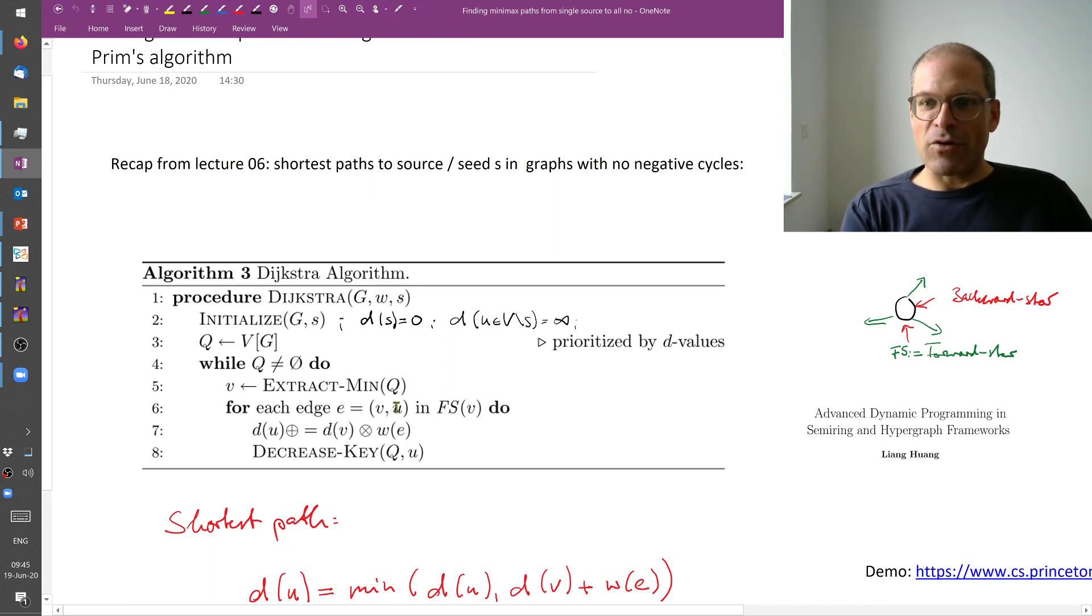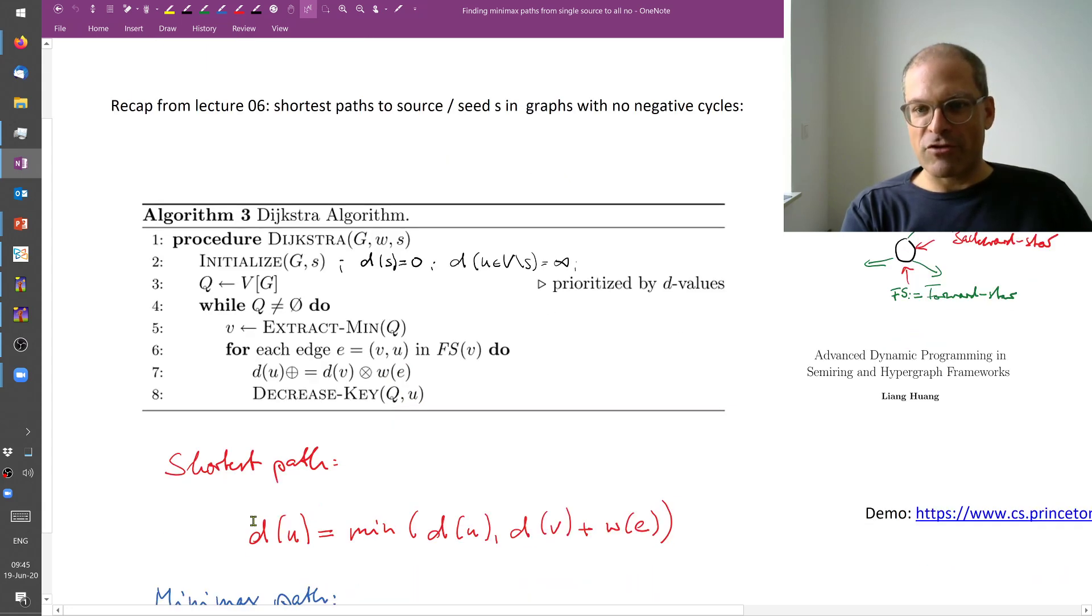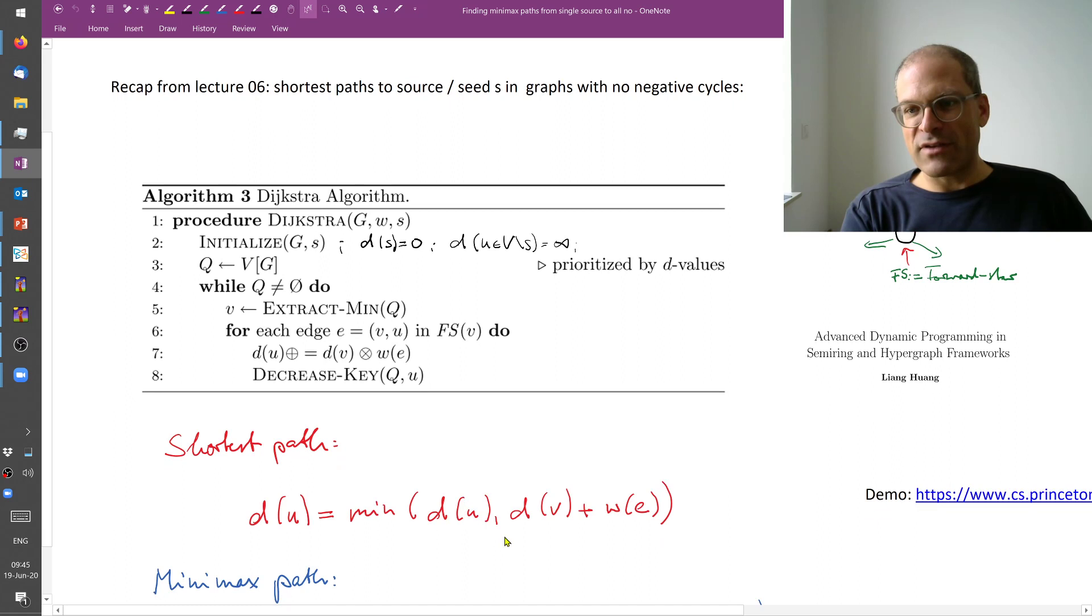So we look at all the edges from v to neighbors u. For the shortest path we update this distance of u to be the smaller of the current distance or the distance up to node v plus the weight of the edge from v to u.